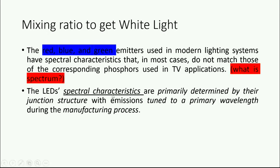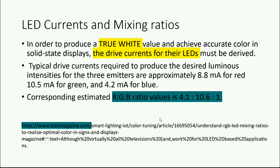The spectral characteristics of an LED are primarily determined by the junction structure, with emission tuned to a primary wavelength during the manufacturing process. A new ratio of primary colors is needed for white LED lighting. For a normal LED, the drive current requirement is in the order of 20 to 30 milliamperes and the voltage is 3 to 4 volts.